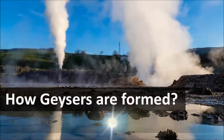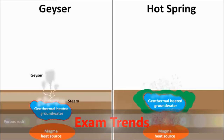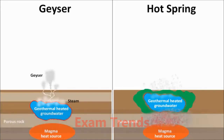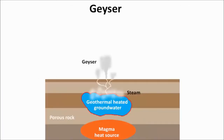In this video, we will learn how geysers are formed. Geysers are like hot springs, where hot underground water comes out of the ground. The only difference between a geyser and a hot spring is that a geyser looks like a fountain. The reason hot water gushes out like a fountain is because the water opening near the surface is narrow.